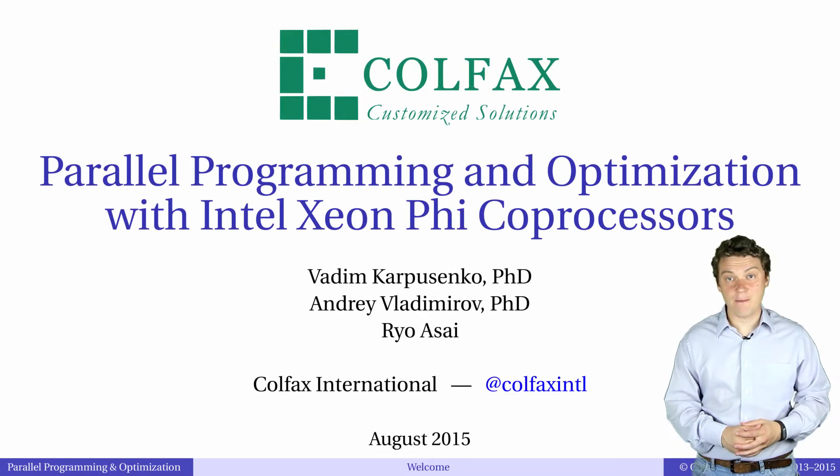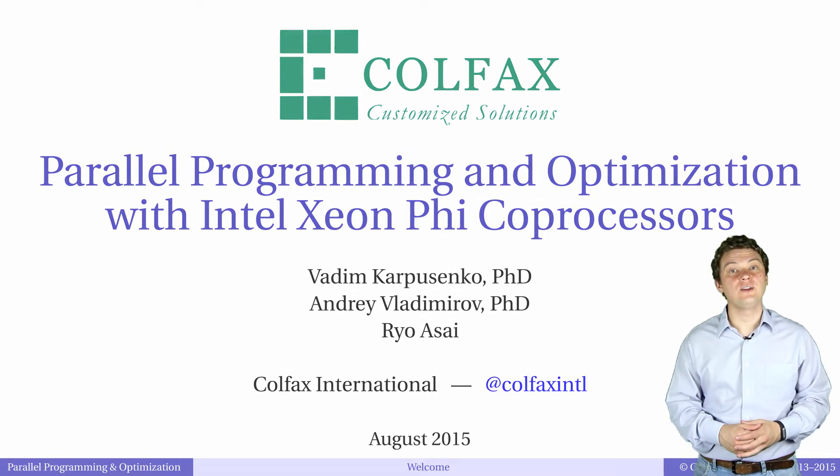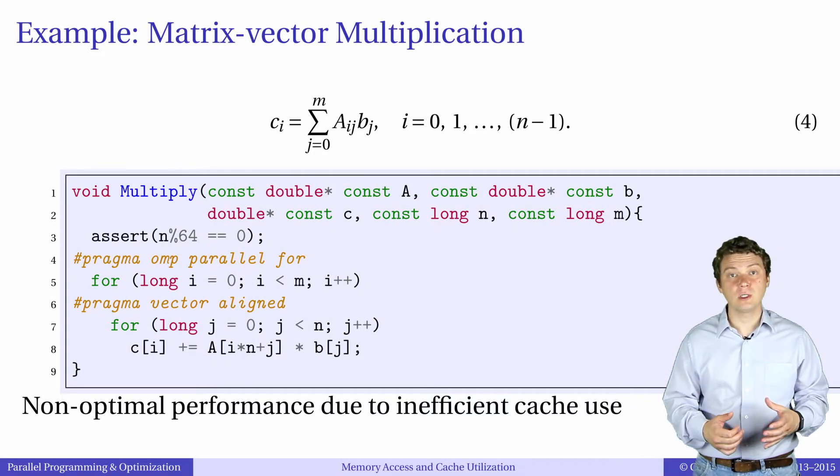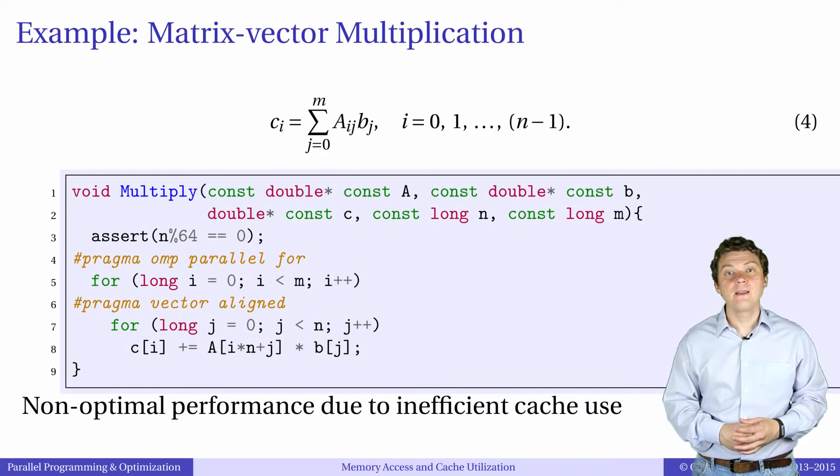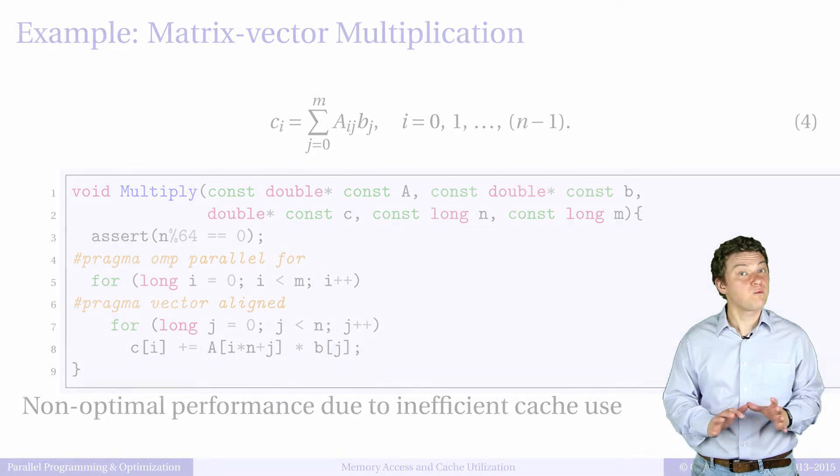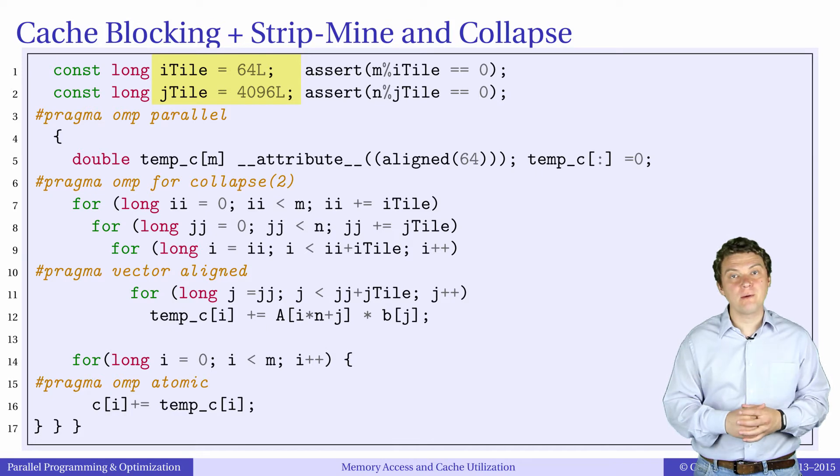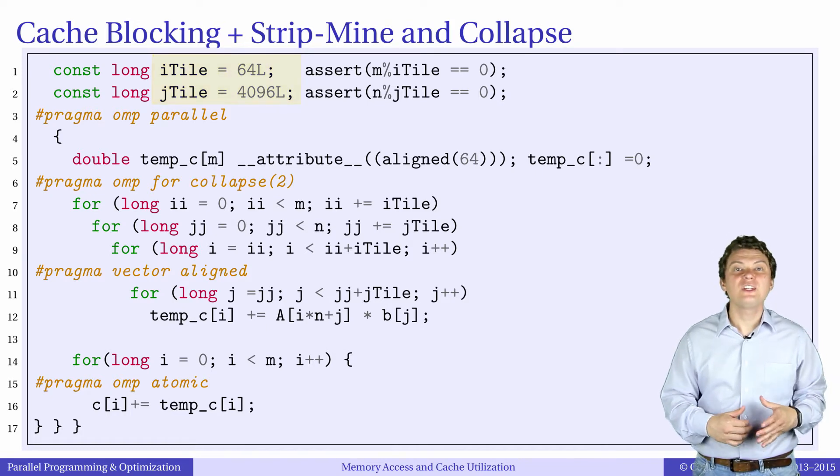In the previous episode, we used loop tiling to improve the reuse of data in matrix vector multiplication. The solution with loop tiling works well, but parameters of tiling must be tuned for every platform, so this approach is not fully portable.